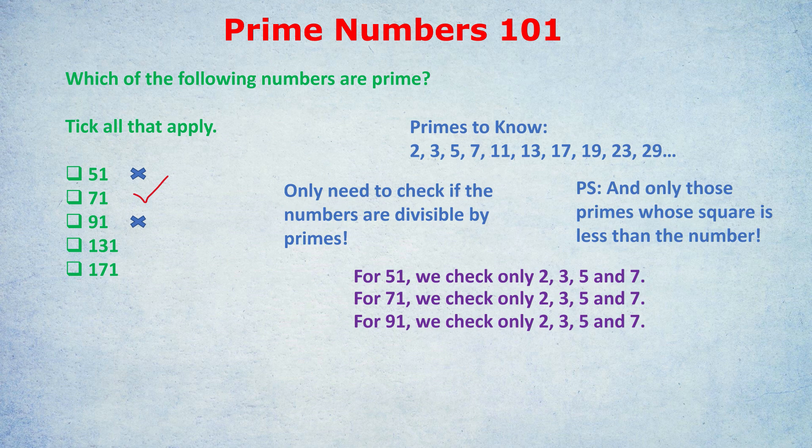What numbers are we going to check for 131? We're going to check 2, 3, 5, 7, and 11 because 11 squared, 121, is less than 131. We don't check 13 because 13 squared is 169, too big. Not divisible by 2, it's not even. Not by 3, the digits add up to 5. Not by 5. Not by 7, and not by 11. So 131 is prime, and look how quick that was. Incredibly quick.